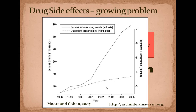You've got this graph that shows drug events — serious drug events versus prescriptions. The amount of prescriptions has gone up fairly steadily, but the amount of side effects has gone up dramatically. Even though prescriptions have increased, serious side effects have increased even faster.